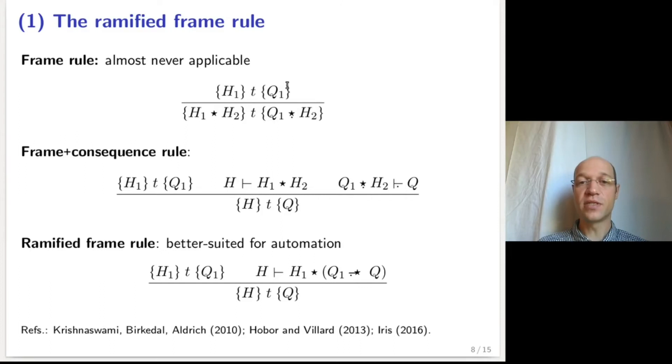The ramified framework avoids this problem altogether by removing the need to introduce h2 in the first place. It reformulates the premises as a single entailment, h entails h1 star some predicates such that, when augmenting q1 with it, we obtain q. The operator at play here is the magic wand for post-condition. Without going into further detail, let me just point out that the ramified frame rule has proved very practical for developing practical tools.